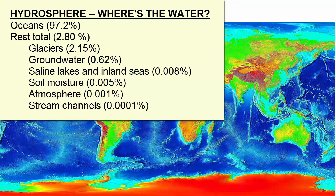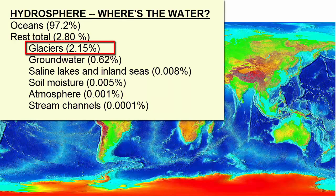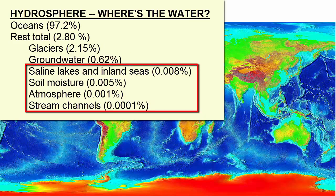What about all that water? No surprise that most of the world's water is in the oceans — 97.2%. Of the remaining 2.8%, most of it is trapped in glaciers. Most of the rest is stored in the ground. All the water that you currently see in lakes and streams, as well as what's held in the soil and atmosphere, represents much, much, much less than 1% of all the world's fresh water.